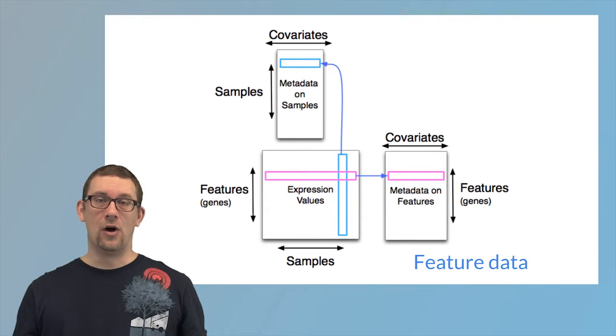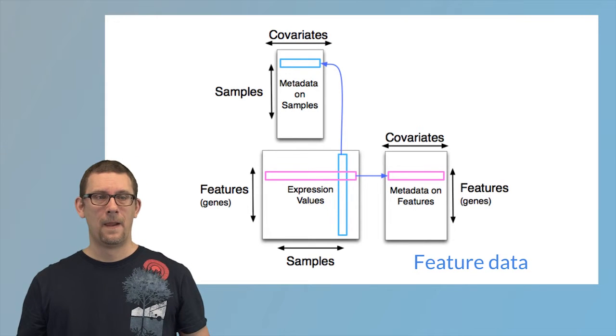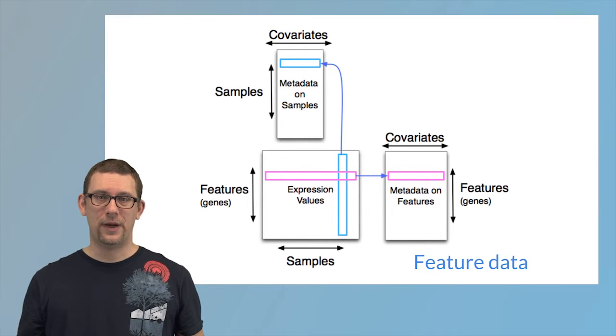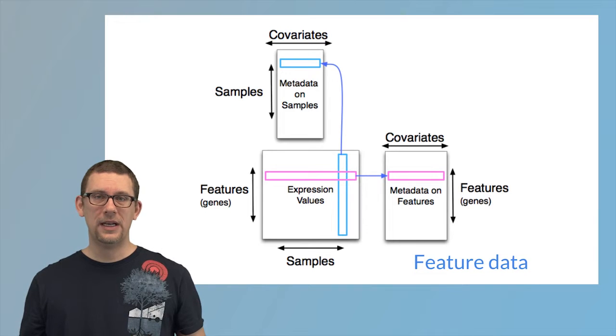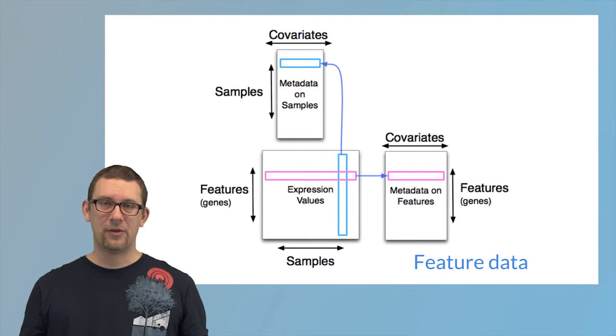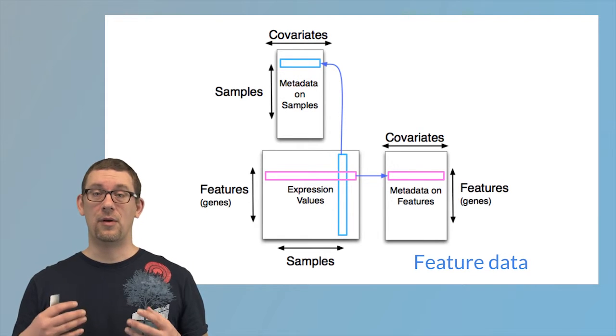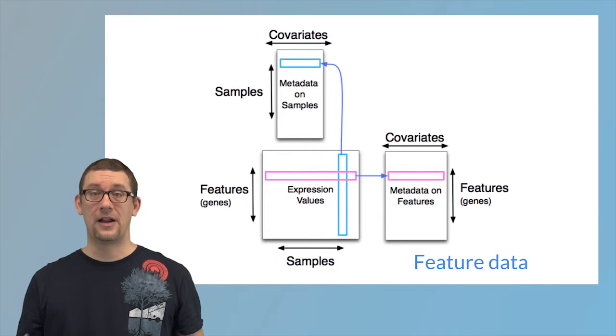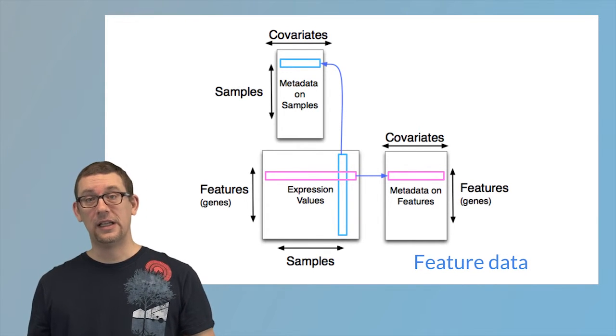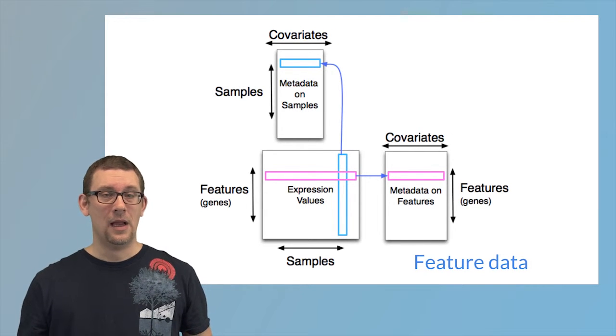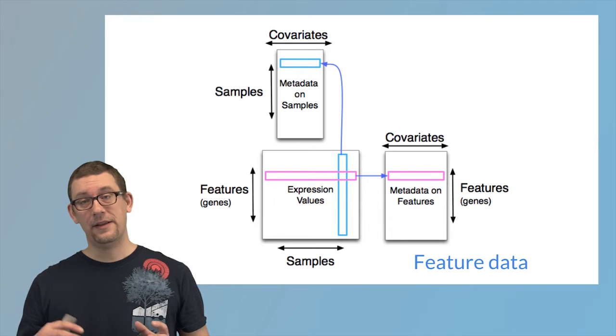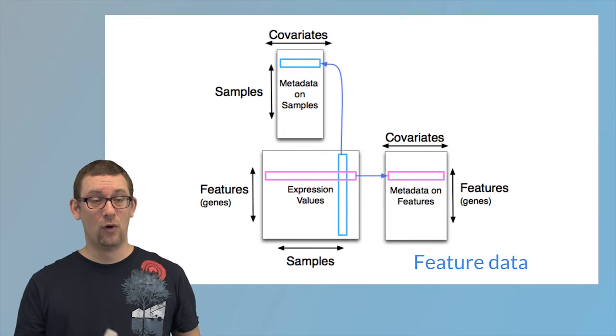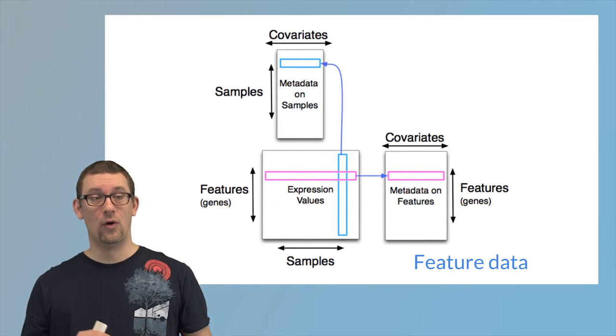We also have metadata on the genes or on the features we have measured. This is information about what feature it is actually we are measuring. For example, on a microarray in a gene expression experiment, we are not really measuring a specific gene. We are measuring a specific RNA sequence that represents a gene. So a type of metadata on the feature could be what sequence was actually measured and what gene does this sequence correspond to. In the same way as the phenotype data and the experiment data are linked together, the feature data and the experiment data are linked together in the sense that one row of the feature data corresponds to one row of the expression data.